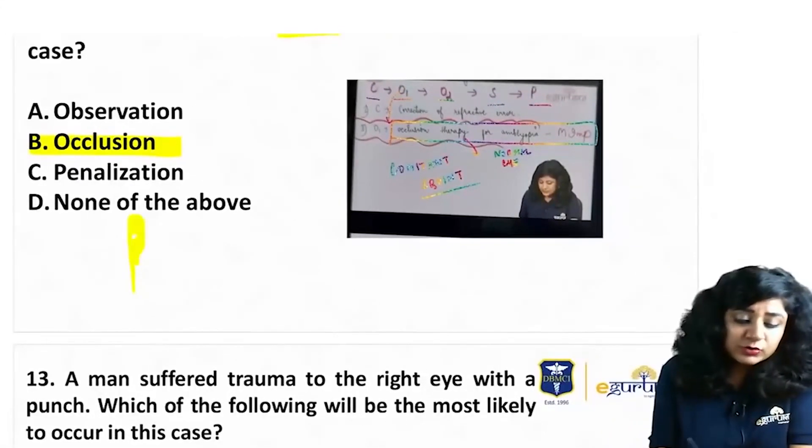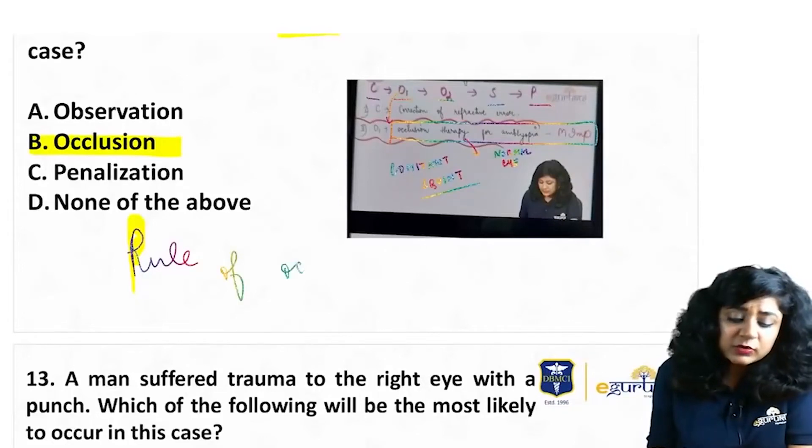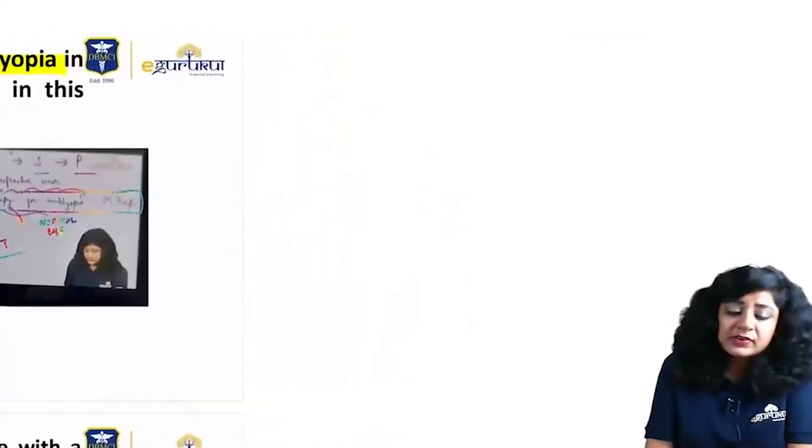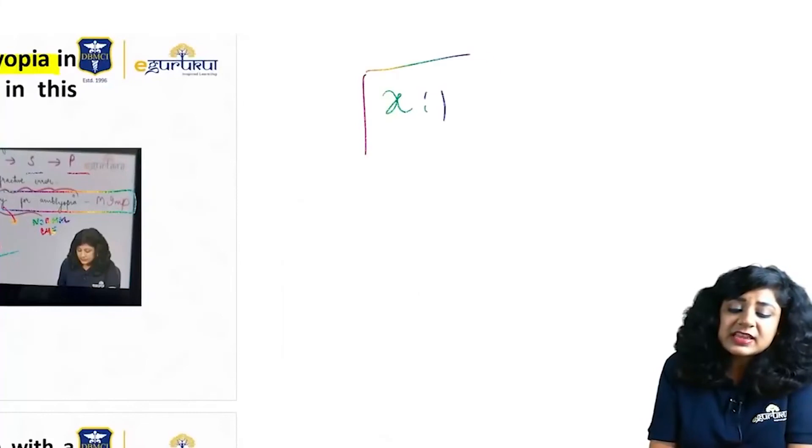You should also know about the rule of occlusion, because you cannot keep on occluding the normal eye all the time - otherwise it will become lazy. So we have to do it in the ratio X:1. What is this X:1? X is the age in years.